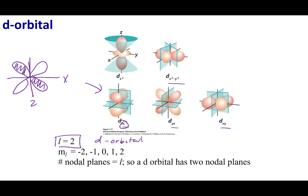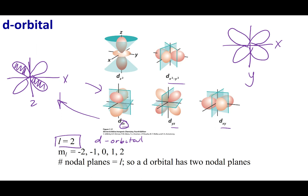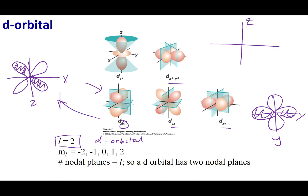The subscripts on these orbitals tell you the plane in which the clover is oriented. For example, DZX has its clover in the ZX plane. For DXY, looking at the XY plane, the lobes of the clover appear between the axes. DX squared minus Y squared is also in the XY plane, but its lobes fall on the axis lines themselves. The other D orbital shape is DZ squared, which has a dumbbell along the Z axis with a donut or toroid around it.